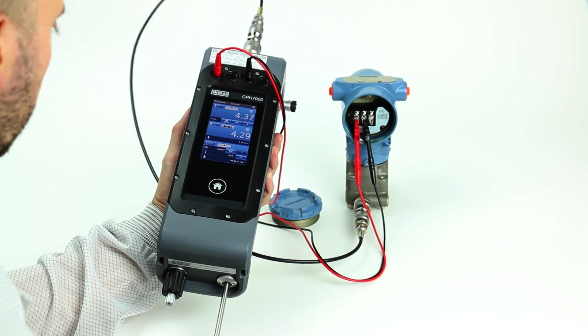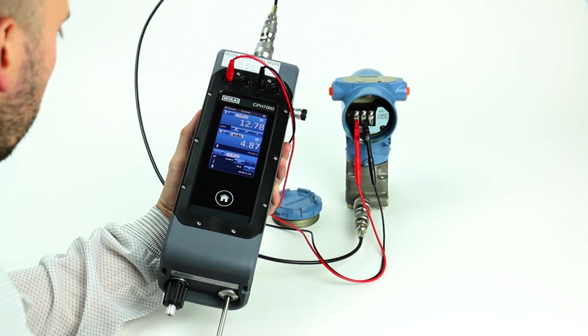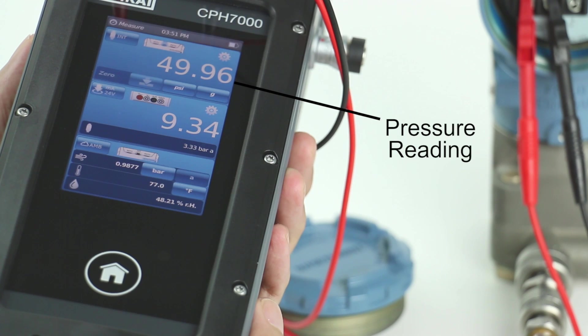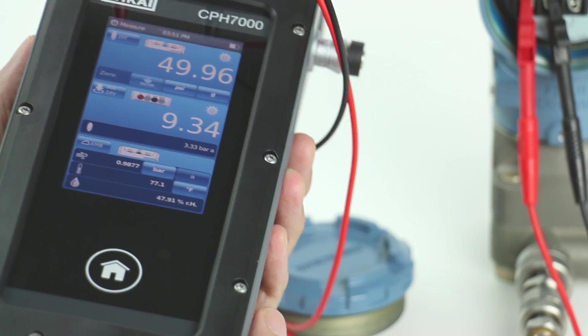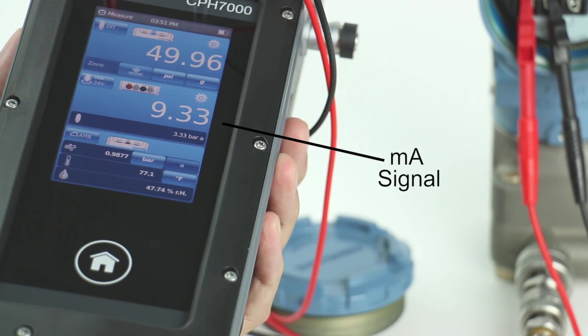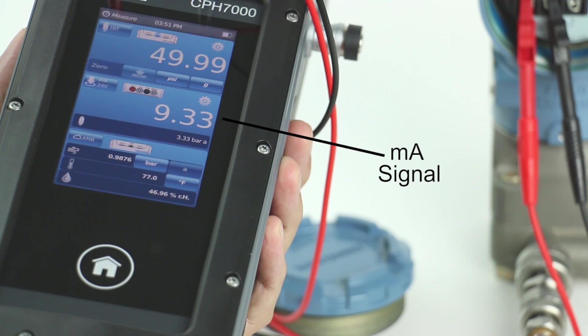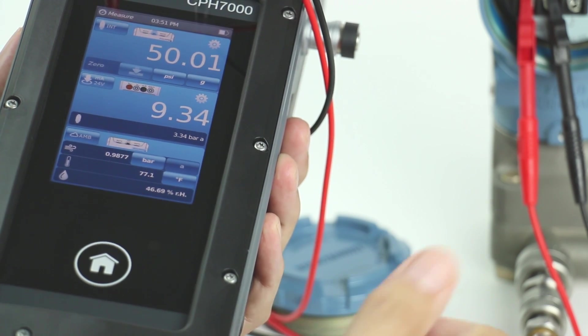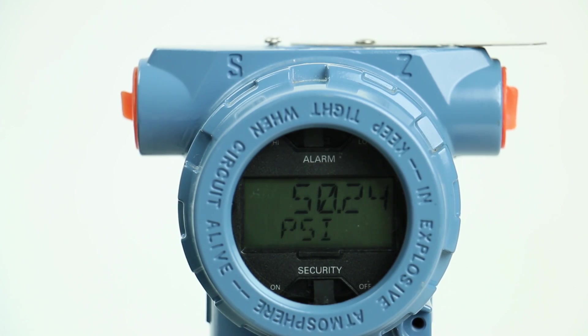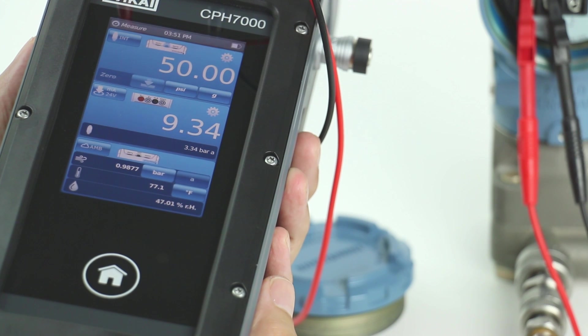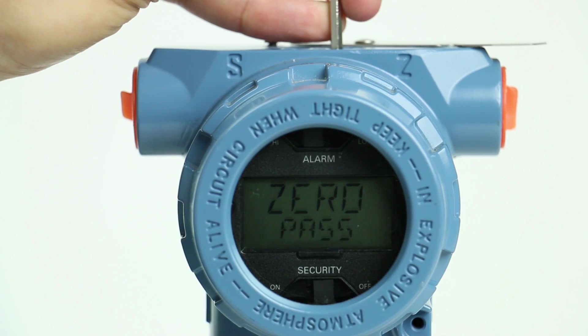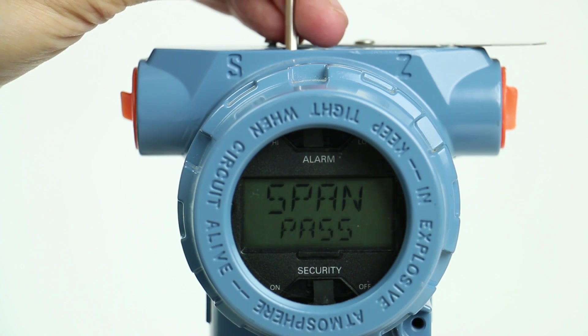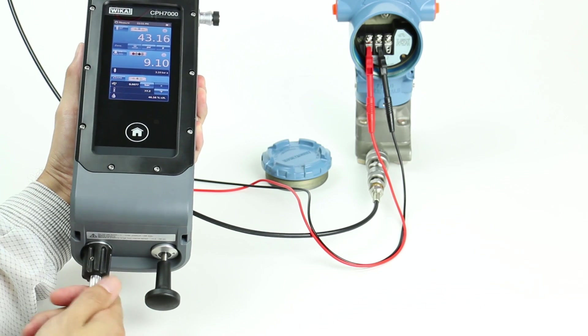The CPH-7000 can generate and measure pressure while simultaneously measuring the 4 to 20 milliamp signal from the 3051 pressure transmitter. By pressurizing the system to a specific point and comparing the output of the transmitter with the reading from the CPH-7000, we can check the zero, span, and any pressure point in between.